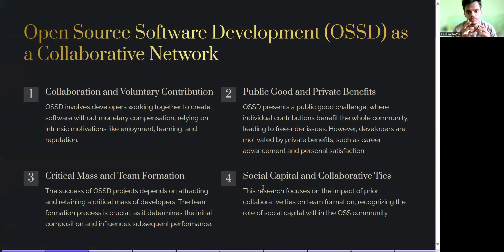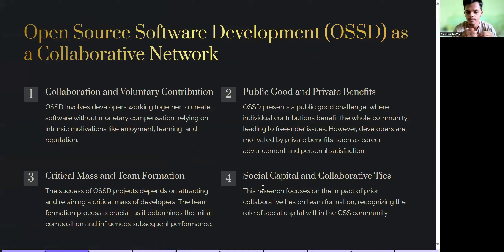Open source software development as a collaborative network — OSSD — covers the following key themes: collaboration and voluntary contribution, public good and private benefits, critical mass and team formation, and social capital and collaborative ties.